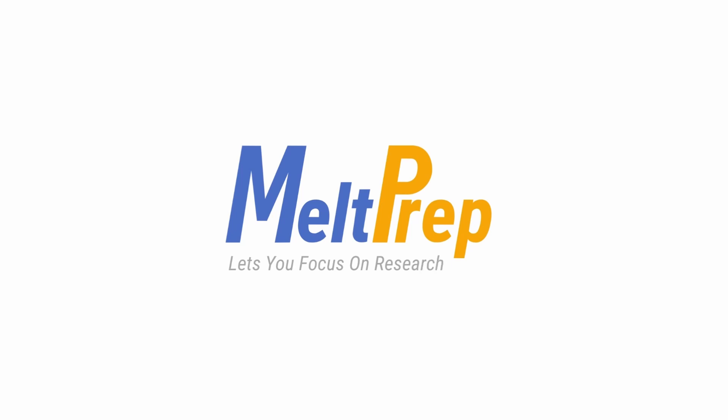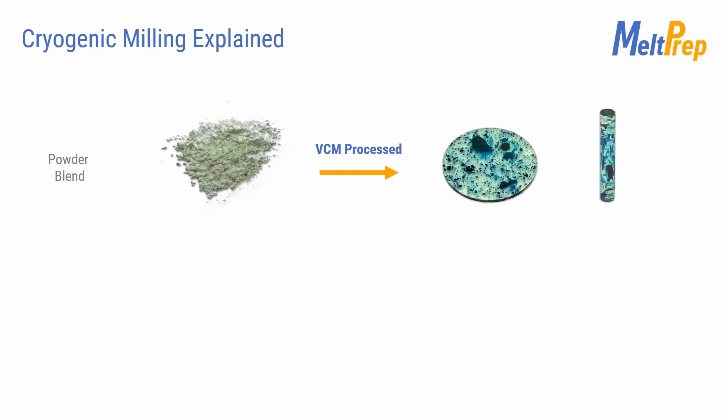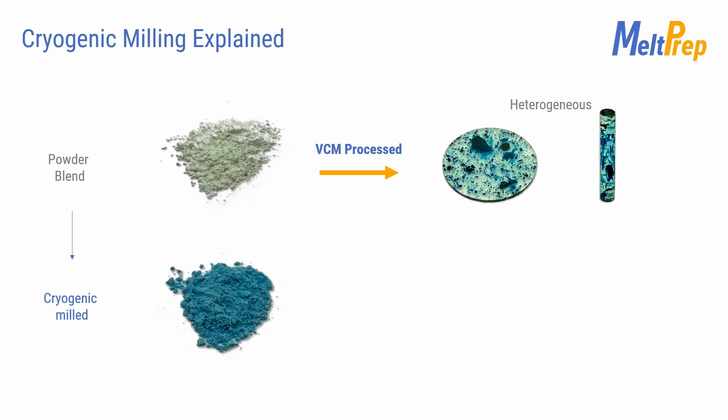Cryogenic Milling Explained. Heterogeneous powder blends can lead to heterogeneous VCM samples. Cryogenic milling reduces the particle size and makes mixtures homogeneous on a micrometer length scale.